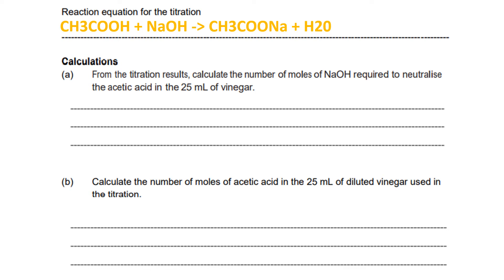Next are the calculation questions. From the titration result, calculate the number of moles of NaOH required to neutralize the acetic acid in 25 ml of the vinegar. This can be done by using the concentration of your stock solution multiplied by the average volume you calculated during the experiment, then multiplied by 1 litre over 1000 ml, which gives you the number of moles of NaOH.